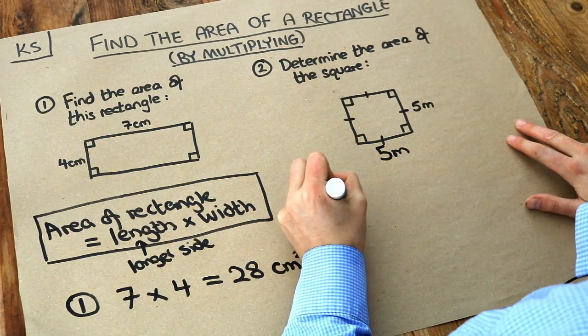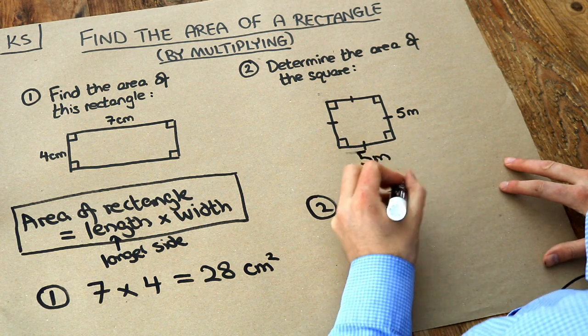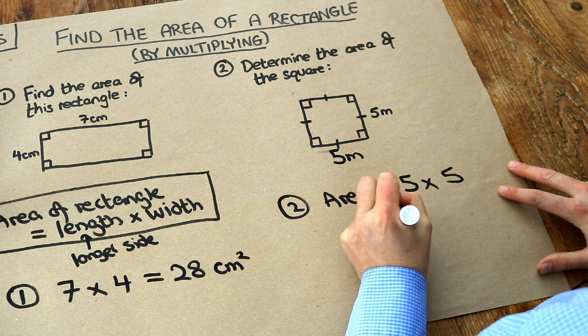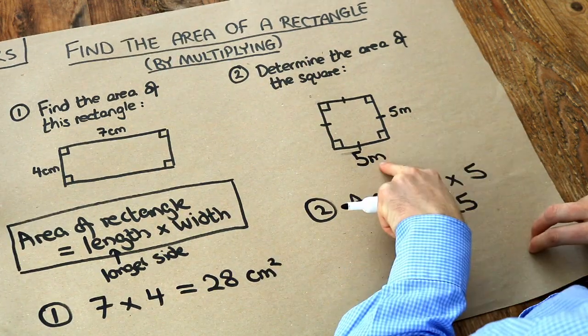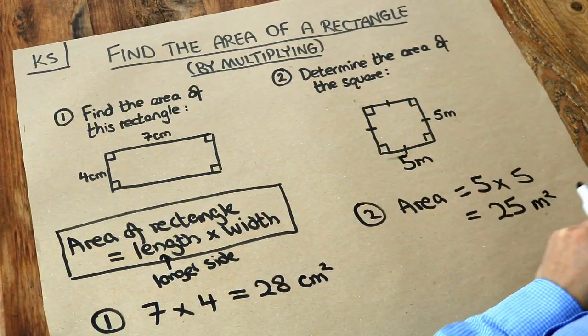And that means the area is going to be the length which is 5 multiplied by the width which is 5. And 5 times 5 is 25. And because the units here is metres it's going to be a unit of metres squared. And that's it.